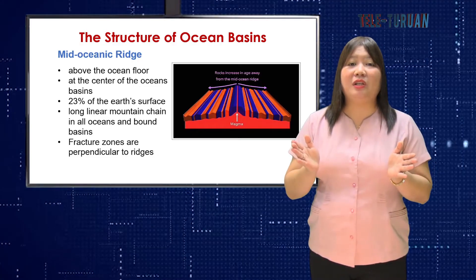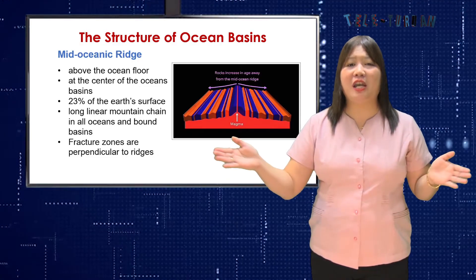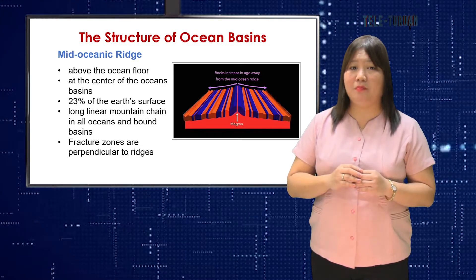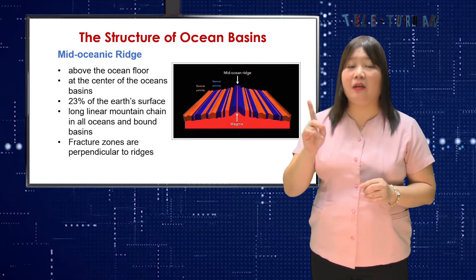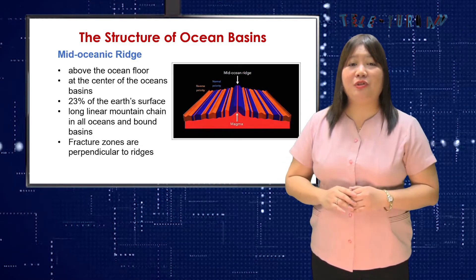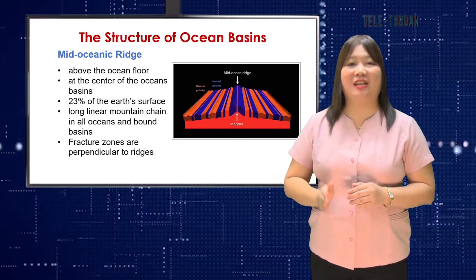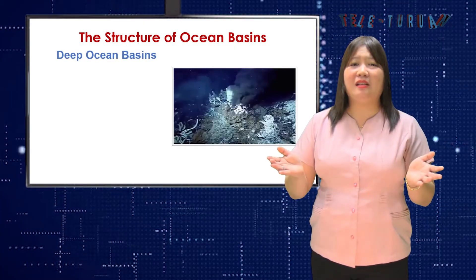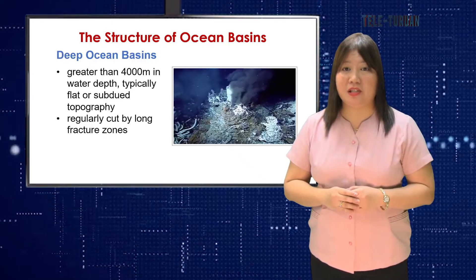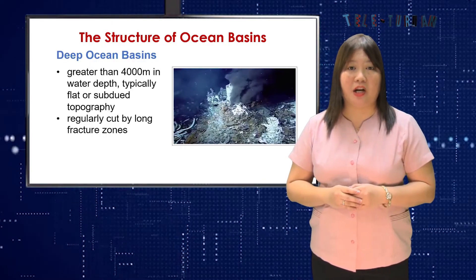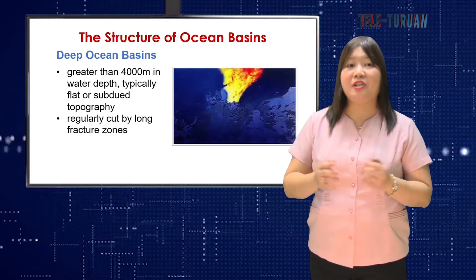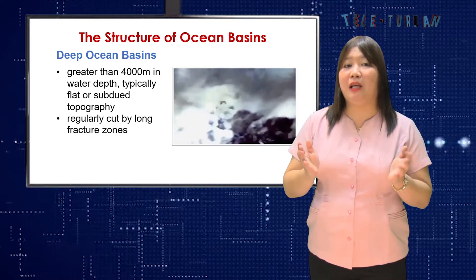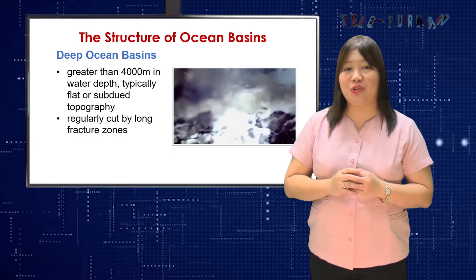Mid-ocean ridges are long linear mountain chains which occur in all oceans and ocean basins. Fracture zones are perpendicular to ridges. Deep ocean basins greater than 4,000 meters in water depth are typically flat or subdued in topography and regularly capped by long fracture zones.